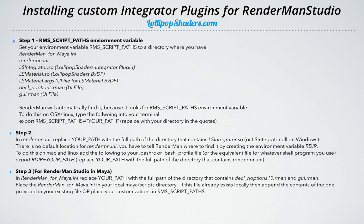For step three, for RenderMan Studio and Maya, we're going to modify our RenderManForMaya.ini file. Inside, we're going to replace our path with a full path to the directory that contains declare-rioptions.rman and gui.rman. Those are in the same directory, even though these are different steps. We're going to place that RenderManForMaya.ini in our local Maya scripts directory — there's a factory version of it, but we're just going to append to it with our extensions, or you can place just your customizations in RMSScriptPaths.